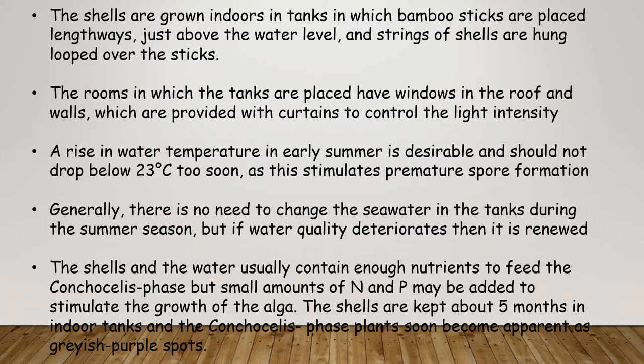The room in which the tanks are placed has windows in the roof and walls, provided with curtains to control light intensity. A rise in water temperature in early summer is desirable and should not drop below 23 degrees centigrade too soon, as this stimulates premature spore formation. Generally there is no need to change seawater in tanks during summer, but if water quality deteriorates it is renewed. The shells and water usually contain enough nutrients to feed the conchocelis phase, but some nitrogen and phosphate may be added to stimulate algal growth. The shells are kept about 5 months in the indoor tanks, and the conchocelis phase plants soon become apparent as grayish-purple spots.